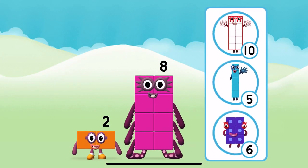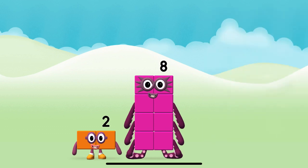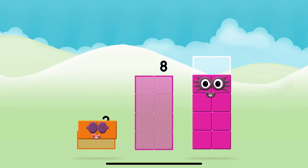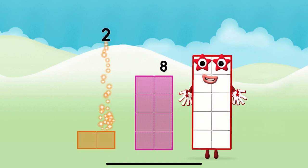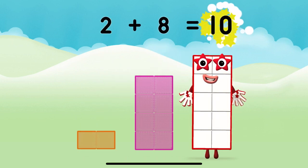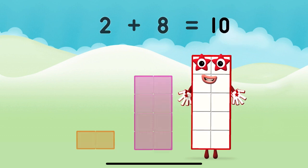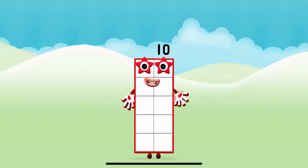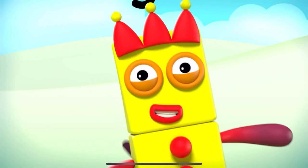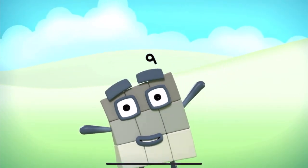What number block will you make when you add these two number blocks together? That's right! Add the number blocks together! Two plus eight equals ten! Super! You made number block ten! One, two, three, four, five, six, seven, eight, nine, ten!